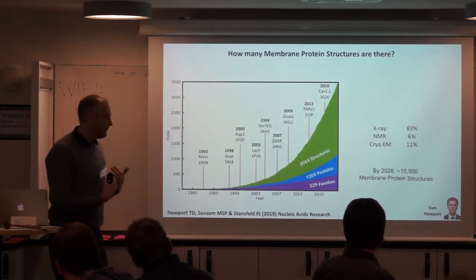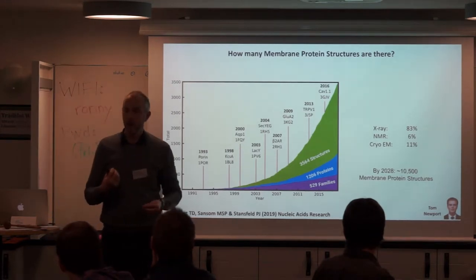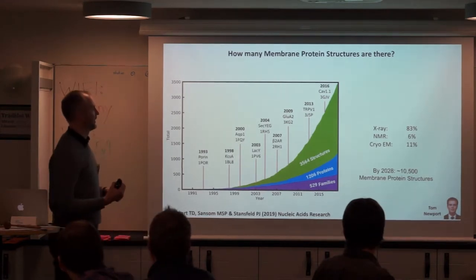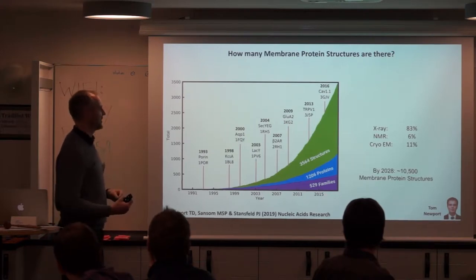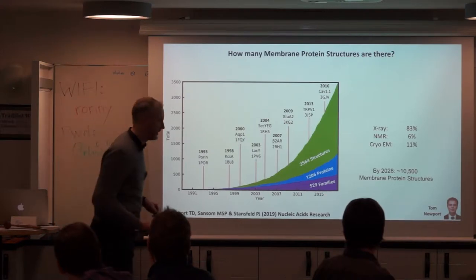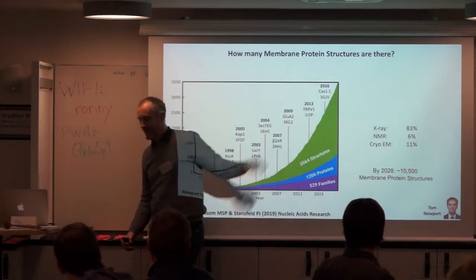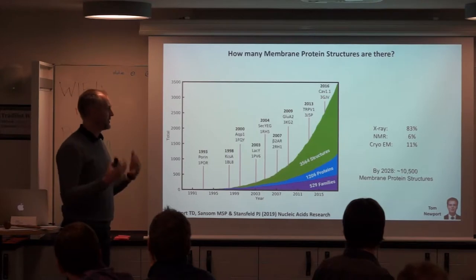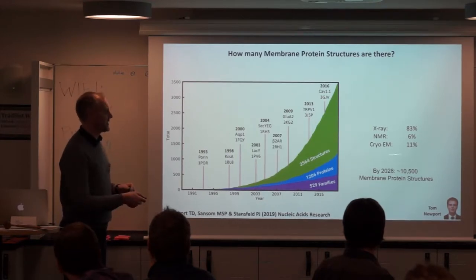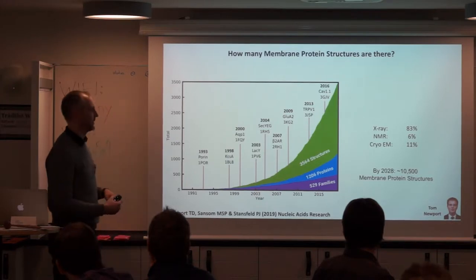The number of membrane protein structures is now just over 3,500. The vast majority of those are solved by the old-fashioned method, X-ray crystallography. Cryo-EM — of course we've had the revolution over the past few years — still sits at only about 11% of those membrane protein structures that have been solved.